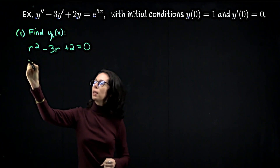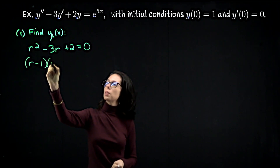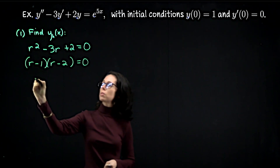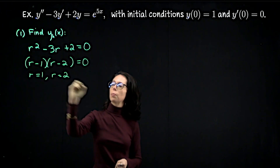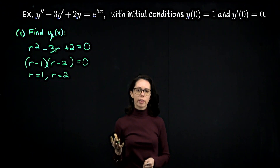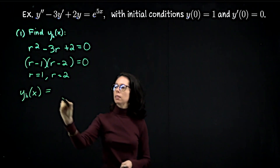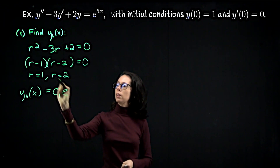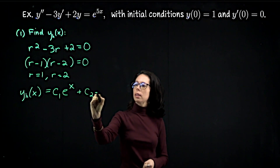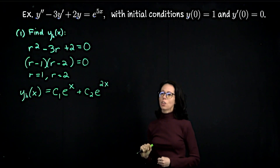In this particular example, the left-hand side factors as (r minus 1)(r minus 2) equals 0. That puts us in the situation of having real and distinct roots: r equals 1 and r equals 2. With real and distinct roots, we can immediately write down the general solution for the homogeneous problem: y sub h of x equals c1 e to the x plus c2 e to the 2x. That is our homogeneous solution.